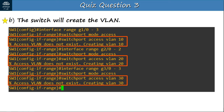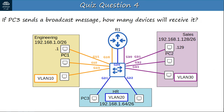Question 4: If PC3 sends a broadcast message, how many devices will receive it? The answer is 3. First, the switch will receive it, then it will send it out of all interfaces in VLAN 20 — so the router and the other PC in VLAN 20 will receive it, making a total of 3 devices. If no VLANs were configured, all other PCs would receive it, but since VLANs are configured, only devices in the same VLAN will receive the broadcast.